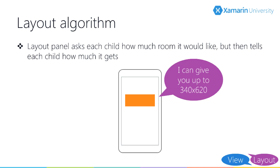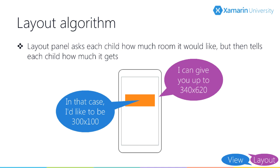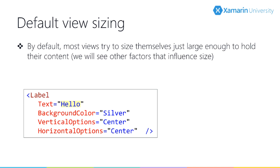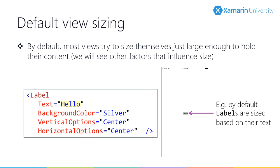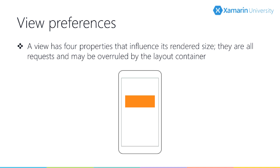The interchange between the panel and the view goes like this: the panel calculates how much size it could give the view and says, 'I can give you up to this size — these are your constraints.' The view then replies, 'given those constraints, I'd like to be this size.' Then the panel makes the final decision. Absent other factors, views tend to size themselves just large enough to hold their content.